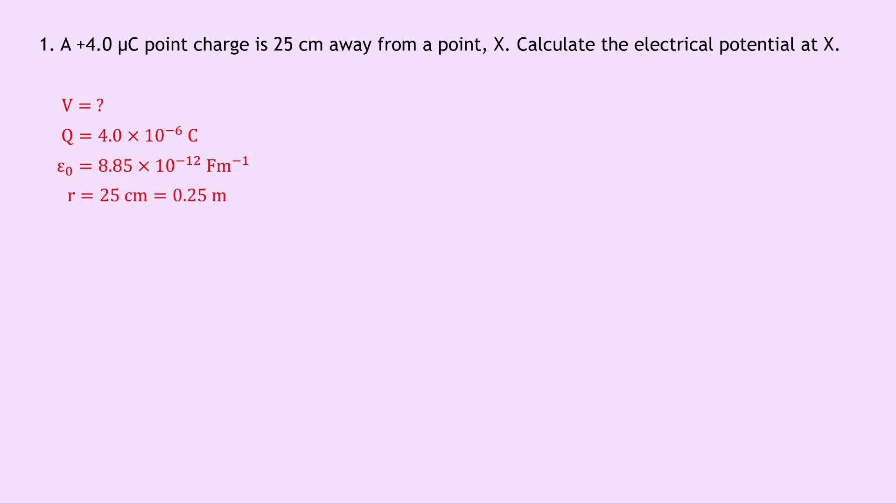Writing down our equation now for electrical potential, also known as electrostatic potential, we have V equals Q over 4 pi epsilon naught r. Substituting in the numbers gives us 4.0 times 10 to the minus 6, divided by 4 pi times 8.85 times 10 to the minus 12, times 0.25. And putting that into your calculator should give you an answer of 1.4 times 10 to the 5 volts. Remember this is a scalar, so we don't need a direction.